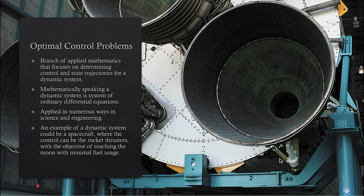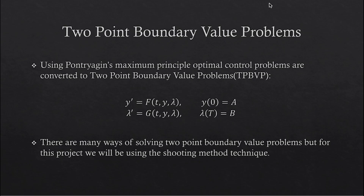The purpose of this project is to study different methods of solving different boundary value problems. There is a method called Pontryagin's maximum principle, which we stated earlier. This principle allows us to transform optimal control problems into something called two-point boundary value problems. Two-point boundary value problems are problems where you have two sets of variables. For one of those sets of variables, you will have an initial condition, and for the other, you will have a terminal condition.